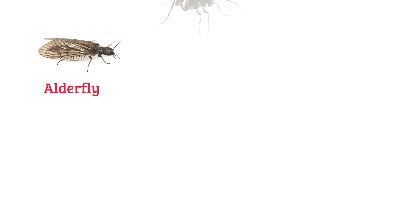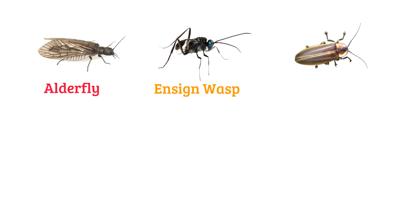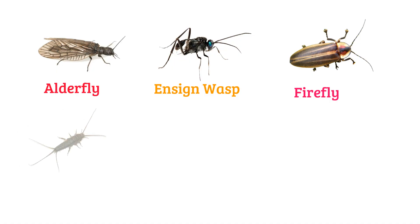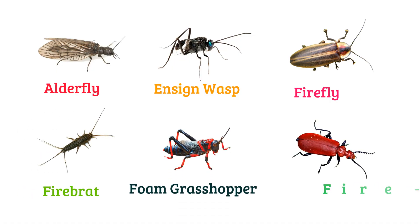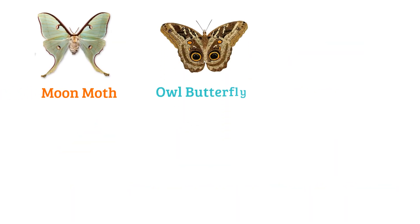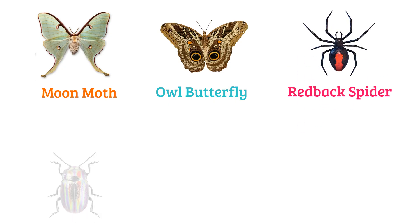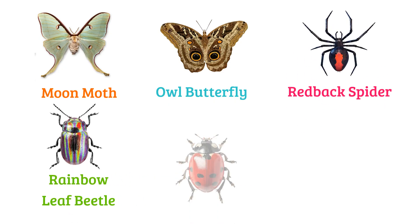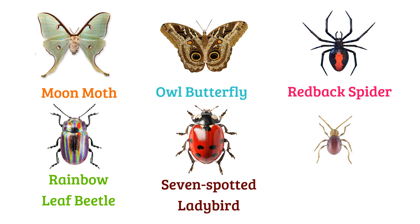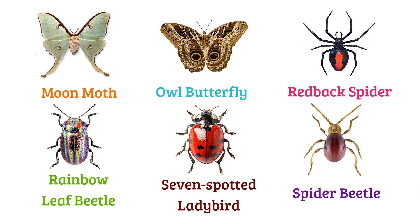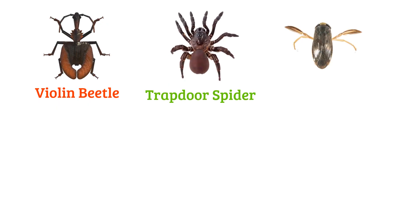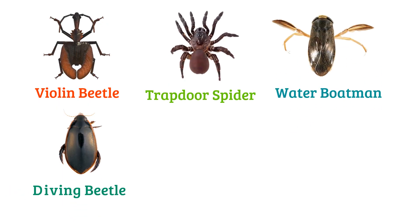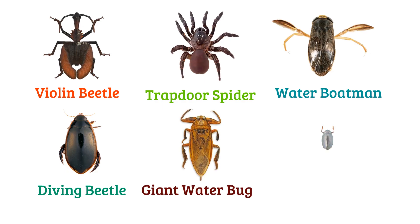Alder fly, ensign wasp, firefly, firebrat, foam grasshopper, fire-colored beetle, moon moth, owl butterfly, redback spider, rainbow leaf beetle, seven-spotted ladybird, spider beetle, violin beetle, trapdoor spider, water boatman, diving beetle, giant water bug.